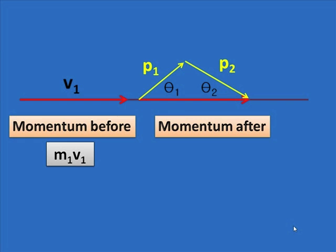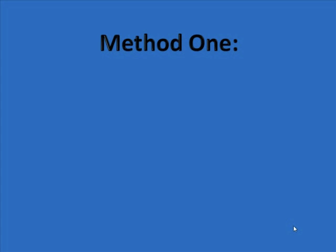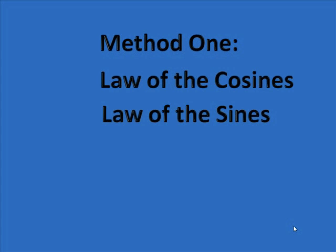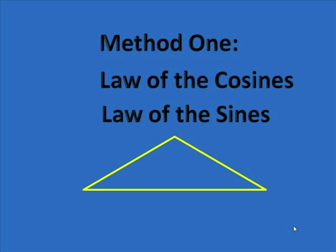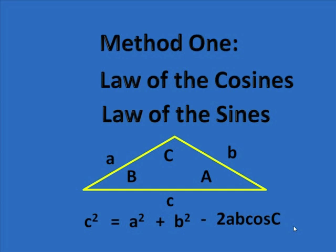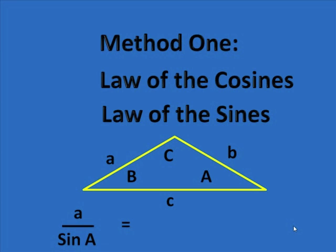Here's the first of the two methods. Method one uses the law of cosines and the law of sines. The law of cosines states: c squared equals a squared plus b squared minus 2ab cos C. The law of sines states: a over sin A equals b over sin B equals c over sin C.